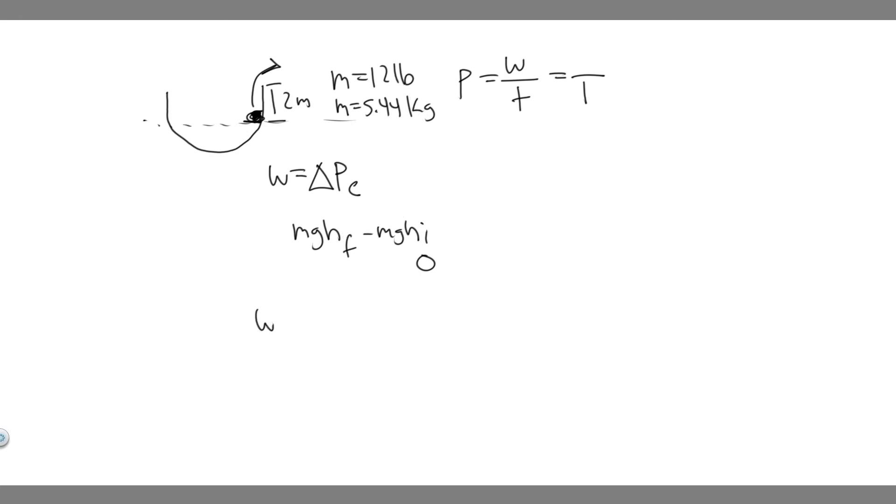Now we can plug it in. The work is going to be the mass, 5.44, multiplied by g which is the acceleration due to gravity, 9.8, times the final height. We're going up two meters, so h is just two.